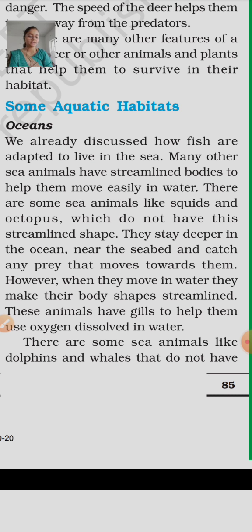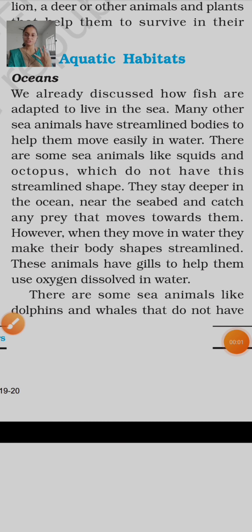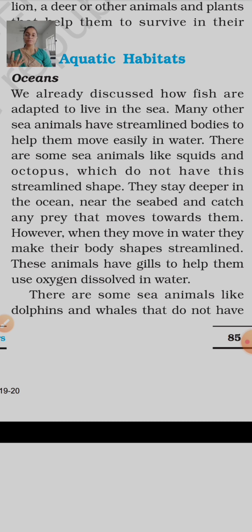So these are three adaptations of the octopus. First, the octopus stays deep in the sea near the sea bed to catch prey. Second, when they move, their body becomes streamlined in shape. Third, they have gills — just like fish — which they use to absorb oxygen from the water.